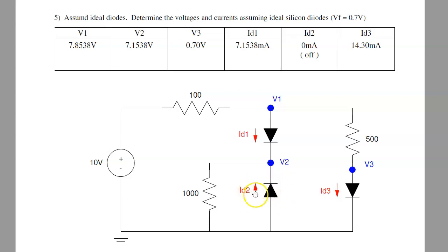If diode 2 is off, I know ID2 is 0. If diode 1 is on, I know that V1 minus V2 is 0.7, and I know that V3 is 0.7. So really just have one unknown, V1.